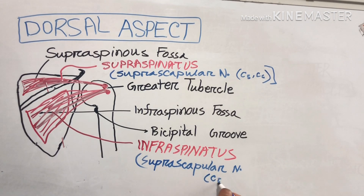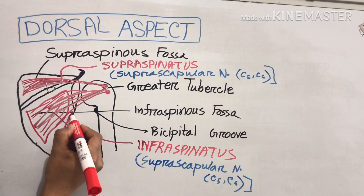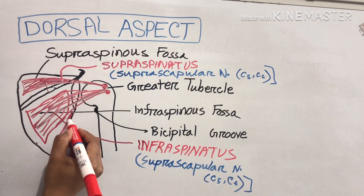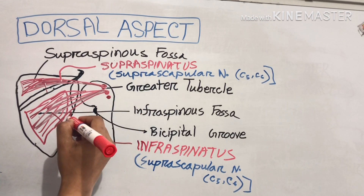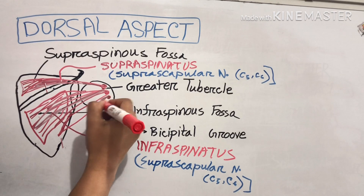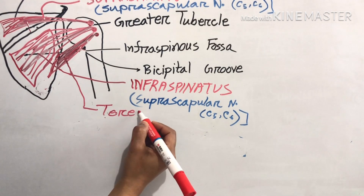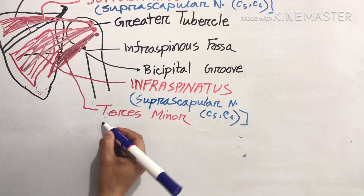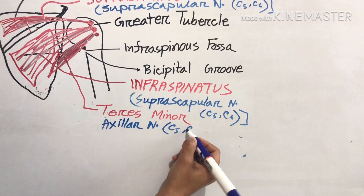Our next muscle is teres minor. Its origin is from the upper two-thirds of the dorsal surface of the lateral border of the scapula, and its insertion is into the lower impression of the greater tubercle of the humerus. Teres minor is supplied by the axillary nerve from C5, C6.